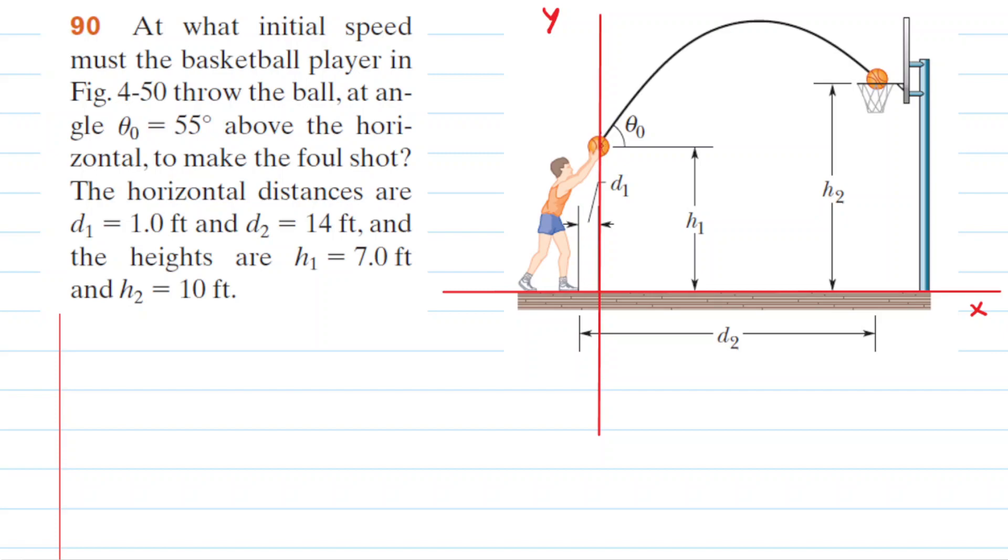Now if you look at this coordinate system carefully, you should see that the initial x-coordinate of the basketball is 0. So we can write that down as x subscript 0 is equal to 0. And then if you look at the diagram, the initial y-coordinate of the basketball would simply be this height right here, marked h1. That was given to us as 7 feet. So we can write down that the initial y-coordinate is equal to 7 feet.